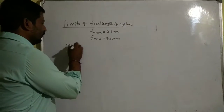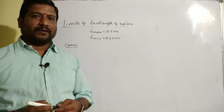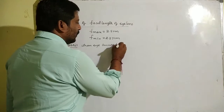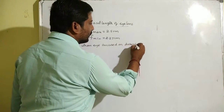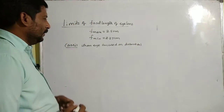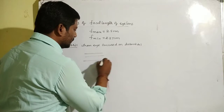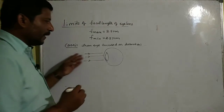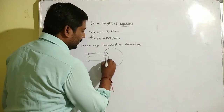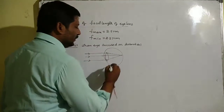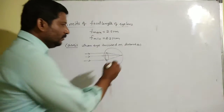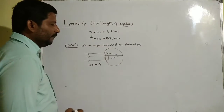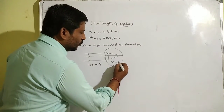Case 1: when the eye is focused on distant objects. Let us draw the diagram. This is the eye lens. When the object is at far distance, we get a parallel beam of light, and the eye lens focuses the image on the retina. So, the object distance u is minus infinity and the image distance v equals 2.5 cm.